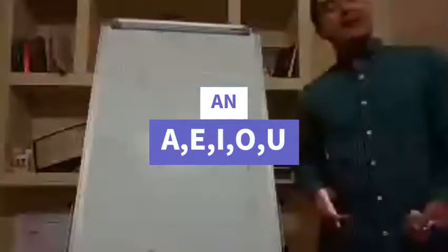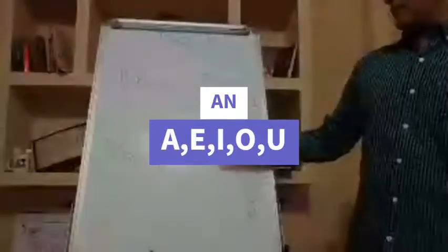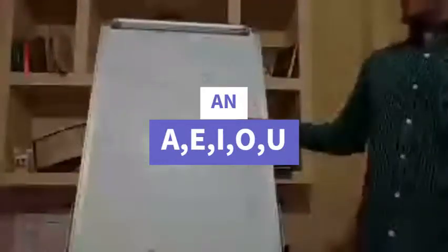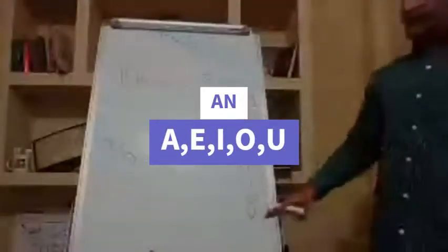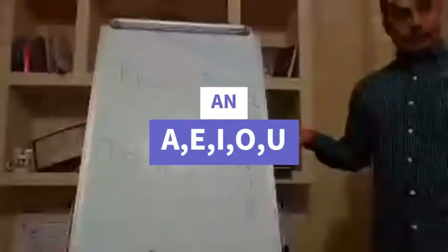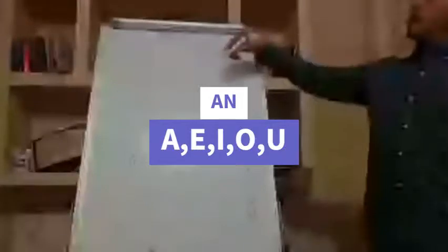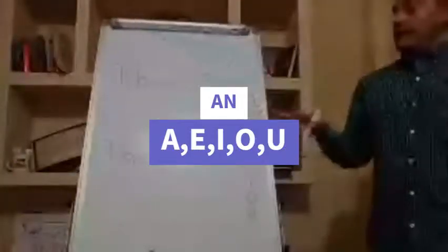Todas las que empiezan con otra letra, como notebook, empiezan con la N. There is a notebook. Solo las que empiezan con A, E, I, O, U, with an. Good? Good. So there is singular. You have three. One. A. And an.